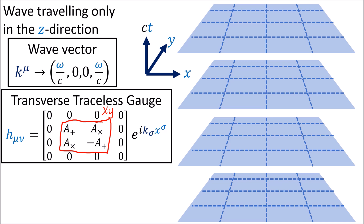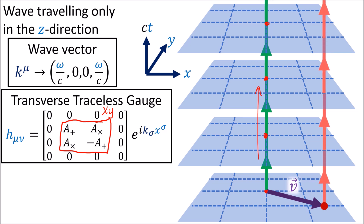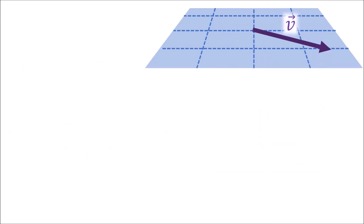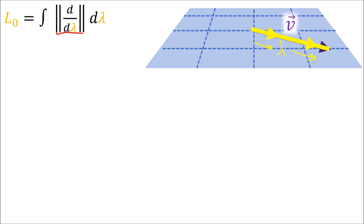We'll start with a geodesic at the origin. Our geodesics have constant position coordinates, so this geodesic remains on the time coordinate curve attached to the origin for all time. Next, let's take a nearby point given by this displacement vector v. We can also look at the geodesic at this point, which also has constant position coordinates. We can then ask how the proper length L0 of this vector changes over time. The technically correct way to approach this is to treat the vector v as a curve parametrized by a path parameter lambda, then get the curve's length by integrating over the curve's tangent vectors d by d lambda.